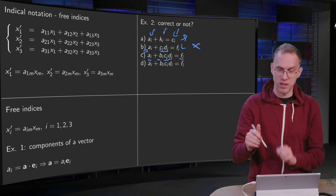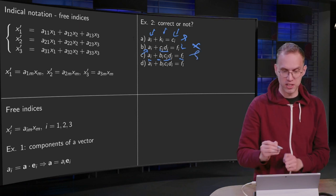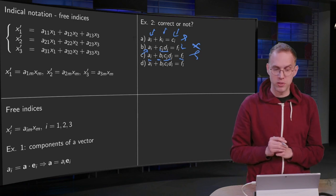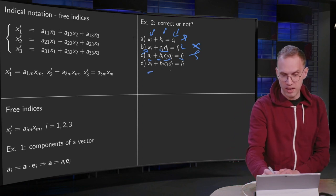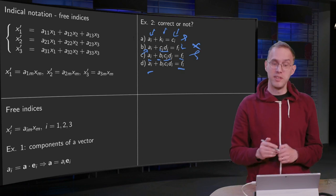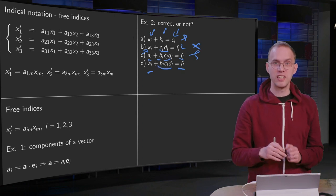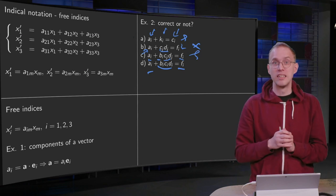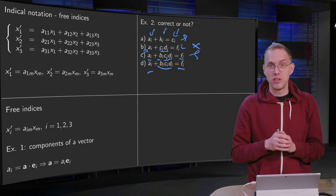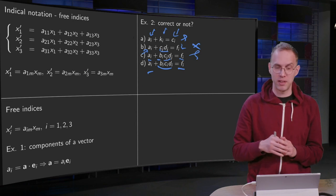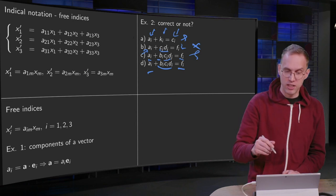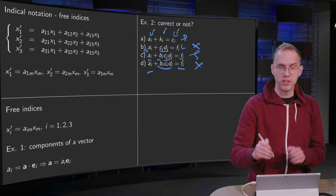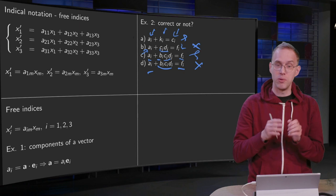And let's take a look at d. What do we have here? The ai and the fi are fine again, but then we have something with three indices. What to do with that? Do we have to sum? It's not clear at all what has to happen here. So this one is not correct because you want to have one i only.